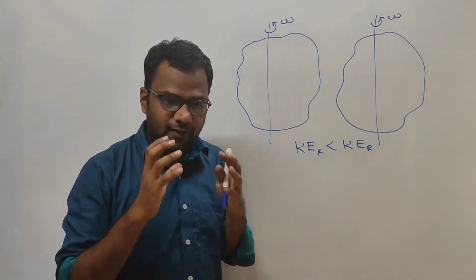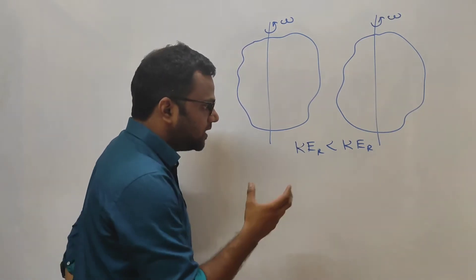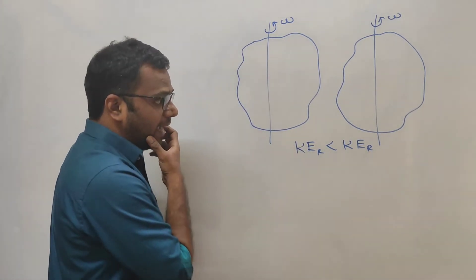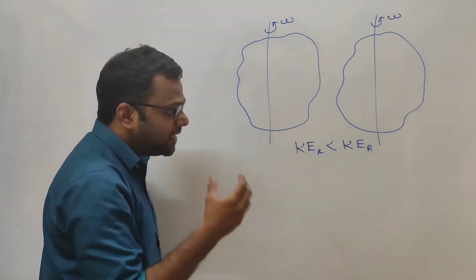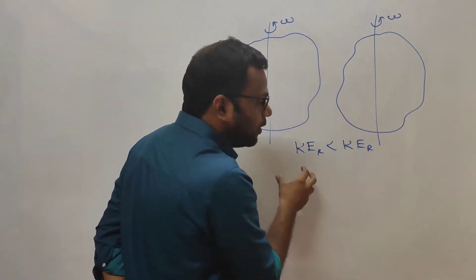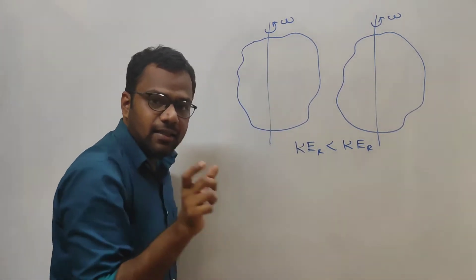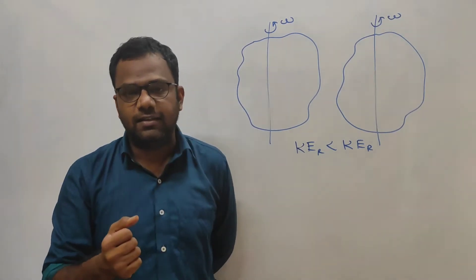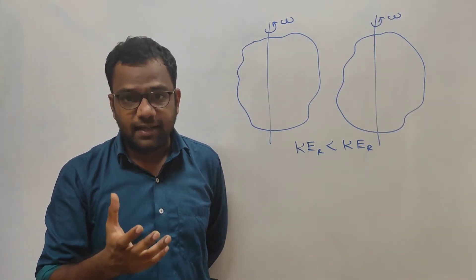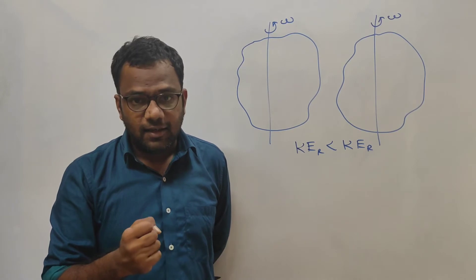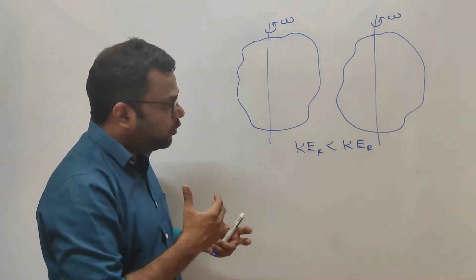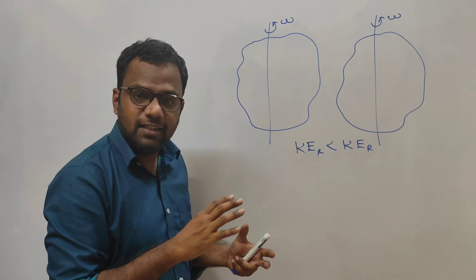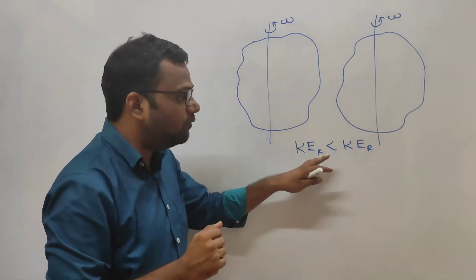Our next job is to find out the formula for rotational kinetic energy. If I plug in that formula for both bodies, I can exactly see what term is more in one than the other — and that exact term will be the moment of inertia. So first we have to derive the formula for rotational kinetic energy, and then we'll come back to this situation.